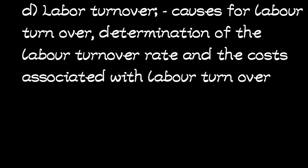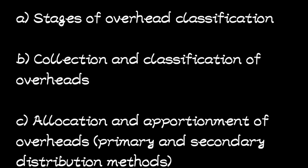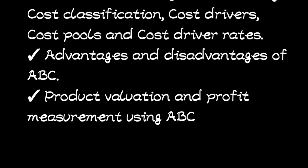Topic four is called Accounting for Overheads. We shall look at the stages of overhead classification. Secondly, we shall look at the collection and classification of overheads. Thirdly, we shall look at the allocation and apportionment of overheads, whereby we shall look at the primary and secondary distribution methods. Lastly, we shall look at activity-based costing — the problems associated with traditional absorption costing, the nature of activity-based costing, and the advantages and disadvantages of ABC.